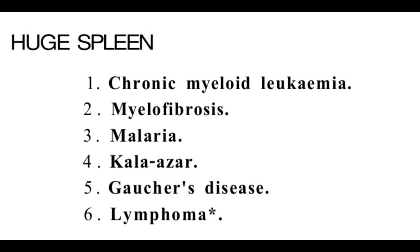If the spleen is enlarged more than 18 cm and reaches up to 22 or 25 cm, it would be considered as hugely enlarged spleen. This can be seen in chronic myeloid leukemia, myelofibrosis, malaria, kala-azar, Gaucher disease, and lymphoma. In all these six conditions, the spleen will be hugely enlarged.